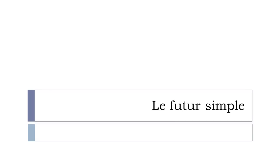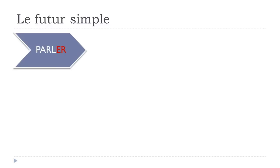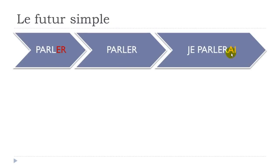Le futur simple — the future tense. For the first group (verbs ending in -ER, e.g., parler), keep the infinitive form and add the endings: AI, AS, A, ONS, EZ, ONT. For the second group (-IR verbs, e.g., finir), same rule — keep the infinitive and add endings: je finirai. For the third group (irregular, e.g., lire), take away the final E and add the endings: je lirai.